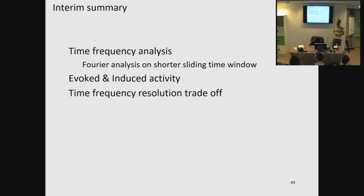A question was raised about how to get evoked activity: your evoked activity will probably also contain some induced activity, but once you average over trials, you average out the induced activity which is not phase-locked. So to get evoked activity, you average across trials and then apply spectral analysis on the average.